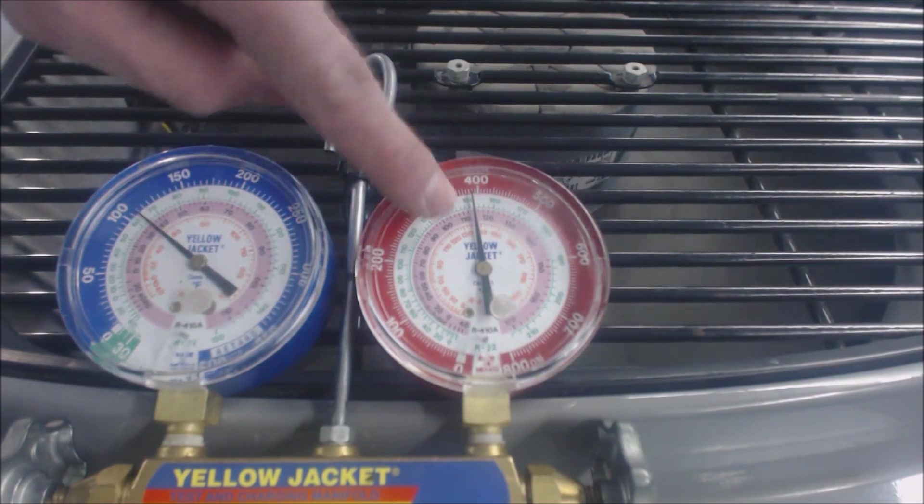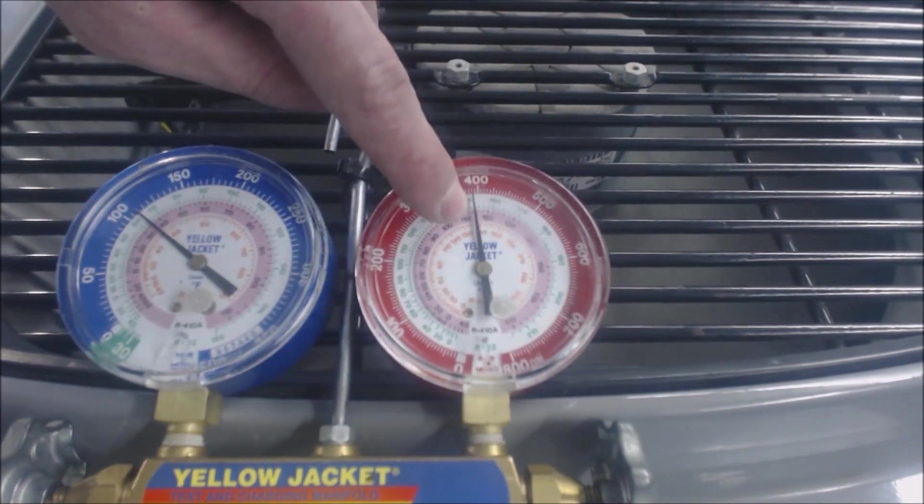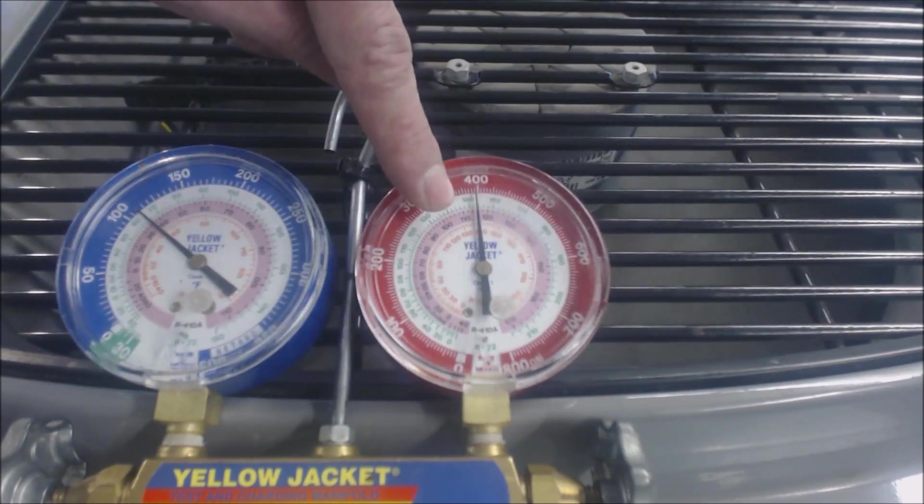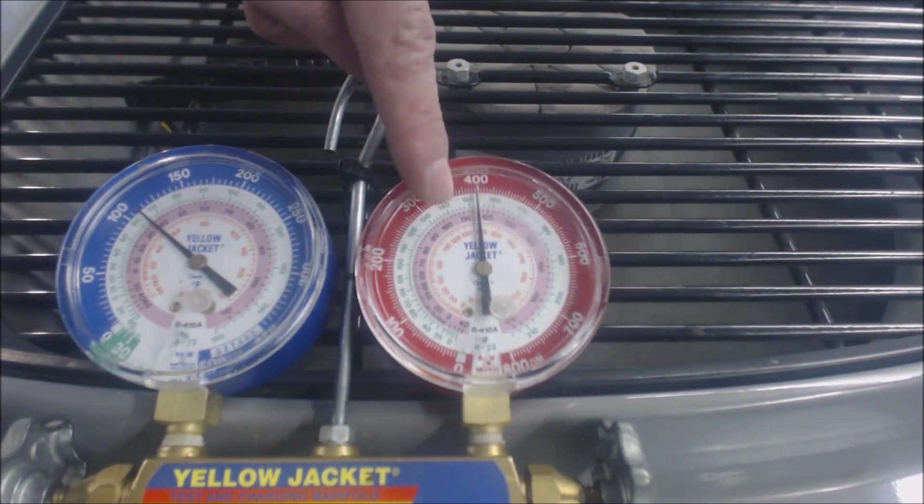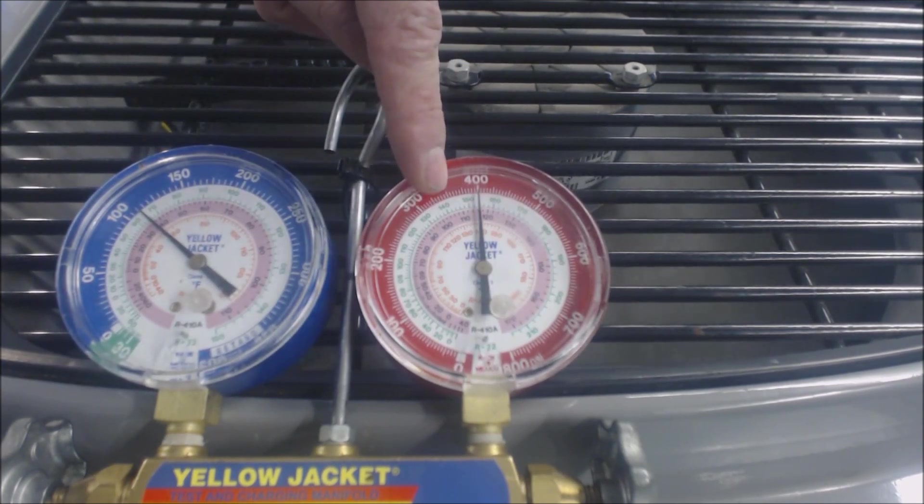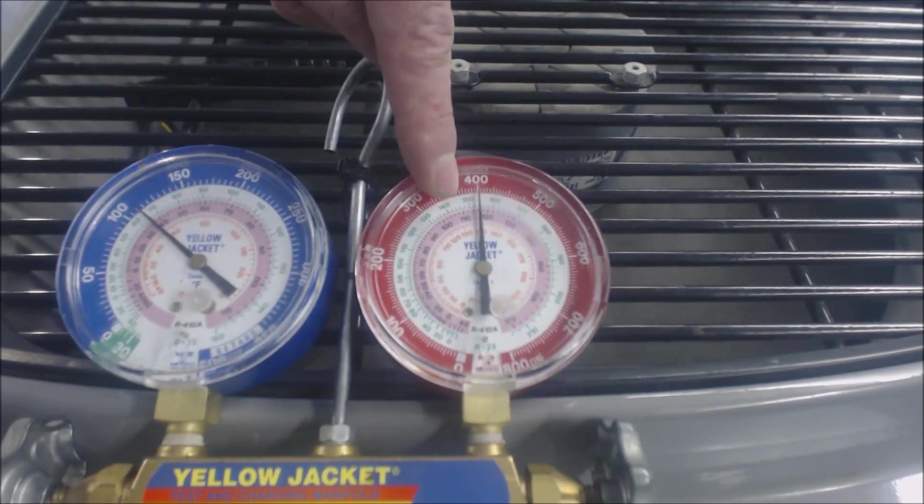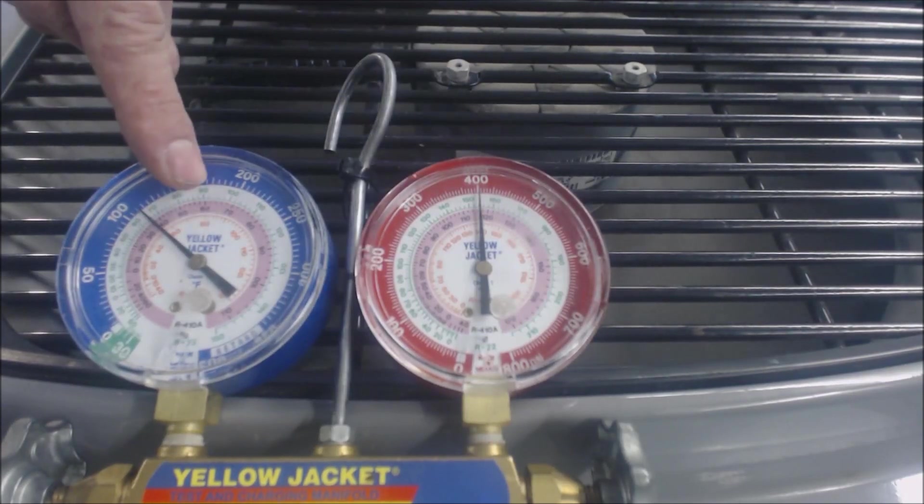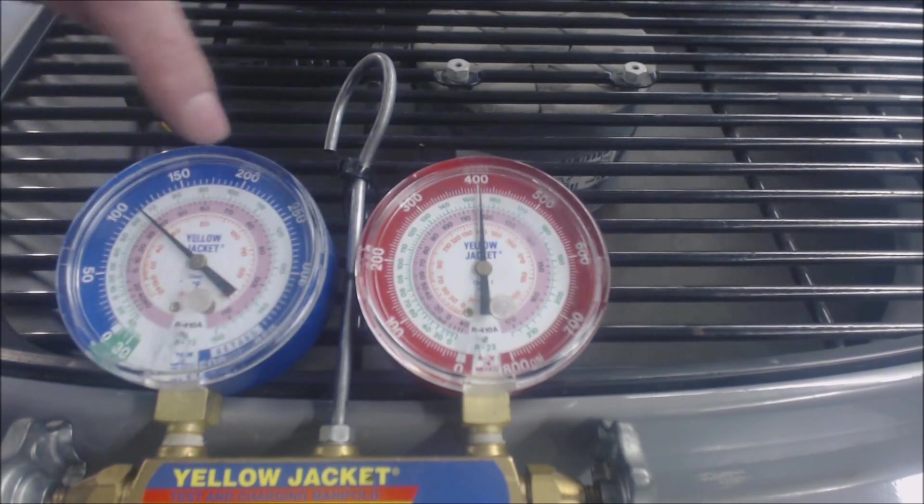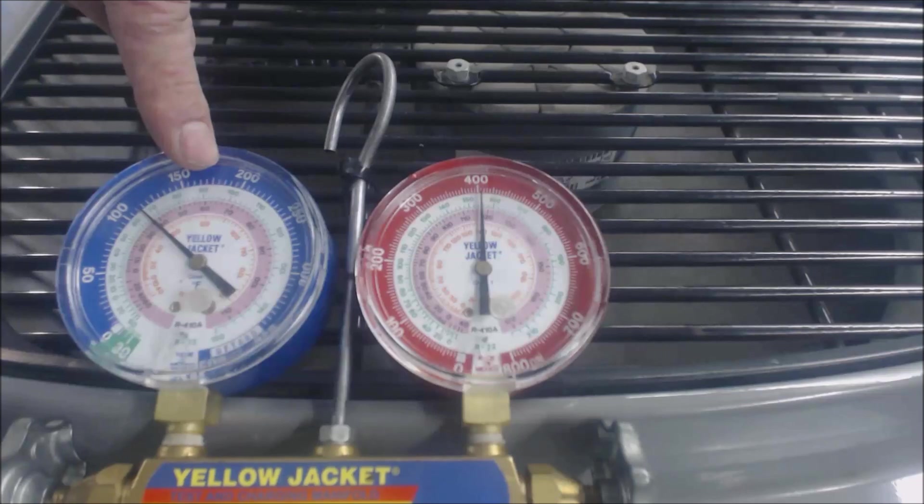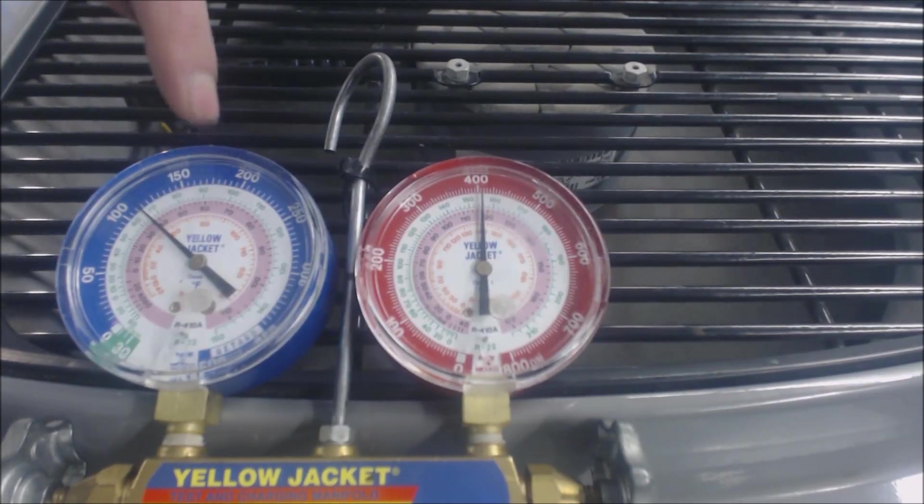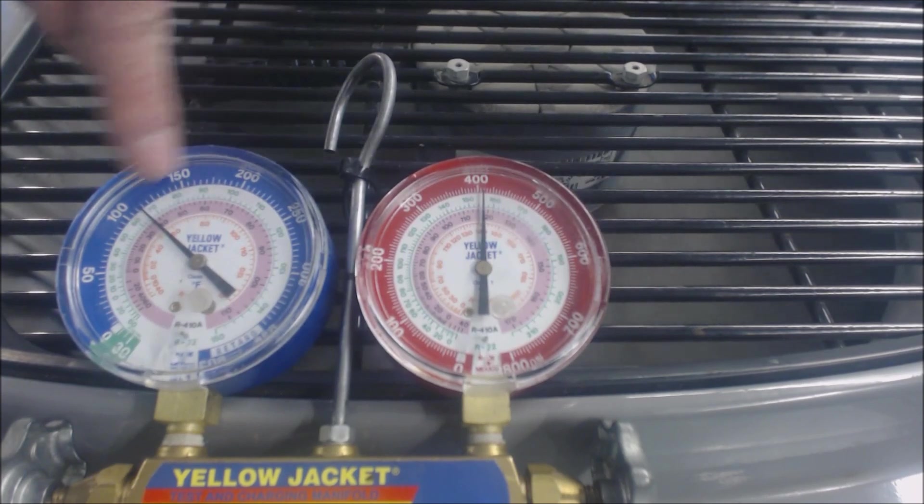So now what we're looking at is this gauge right here is on the large vapor line, which in cooling mode would be the low pressure vapor, and in this case it's in heat mode, it is high pressure, high temperature discharge gas going to the indoor unit. But we have this hooked to the port on the outdoor unit. This right here is true suction. So on heat pumps it's typically found by itself, not connected to a service valve, but just a straight valve port most of the time. But this is true suction.